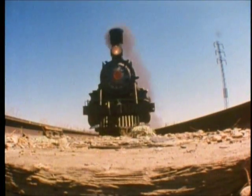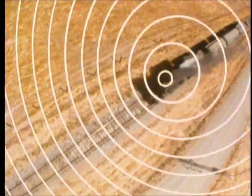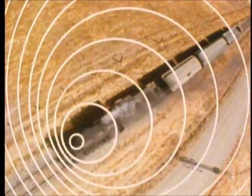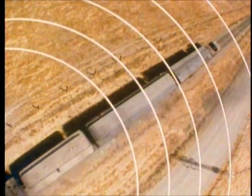Now let's start the train moving. The waves spreading out ahead of it get squashed together, and those spreading out behind it get stretched apart. The compressed waves have a higher frequency or pitch than the stretched-out waves.